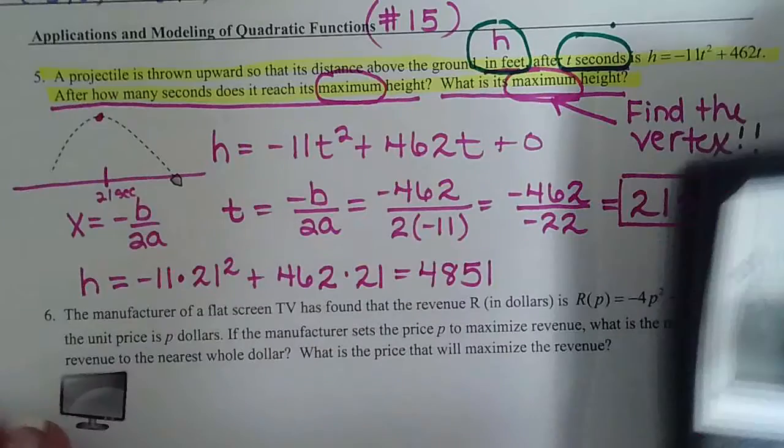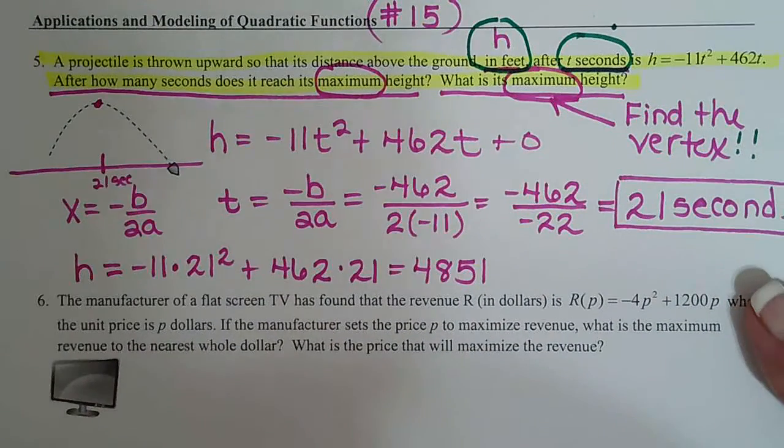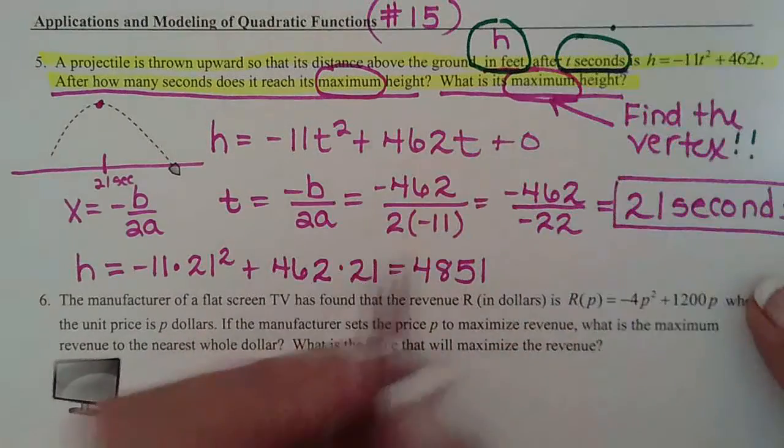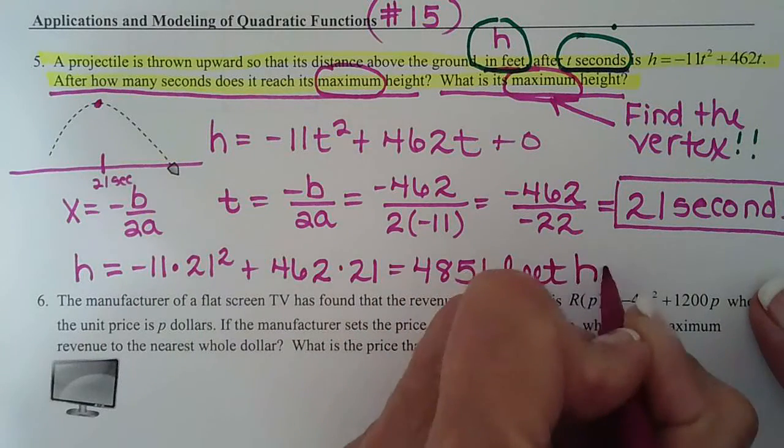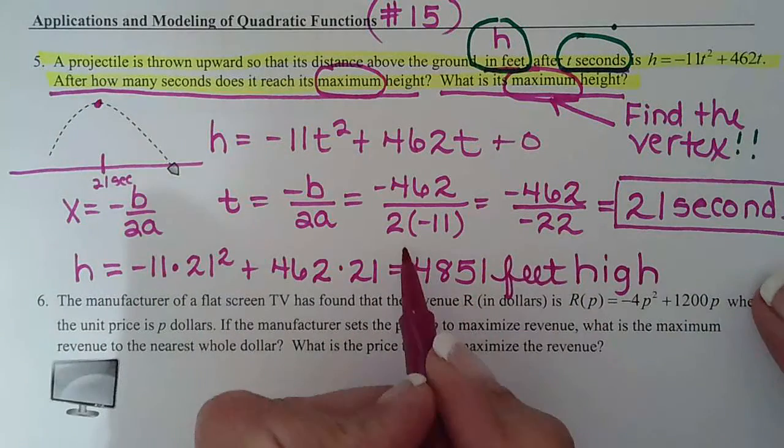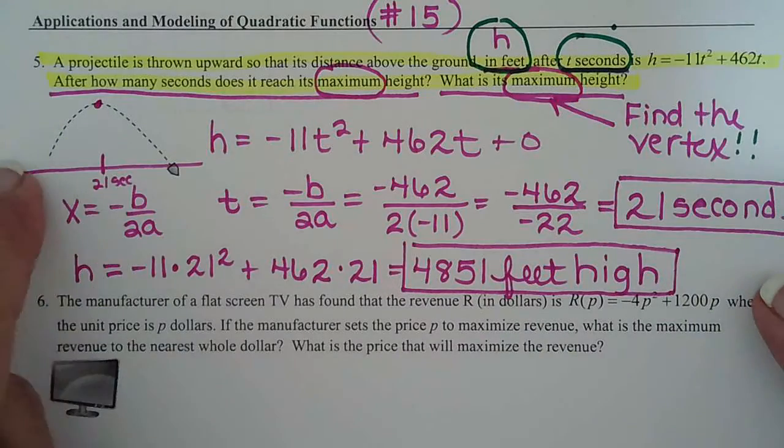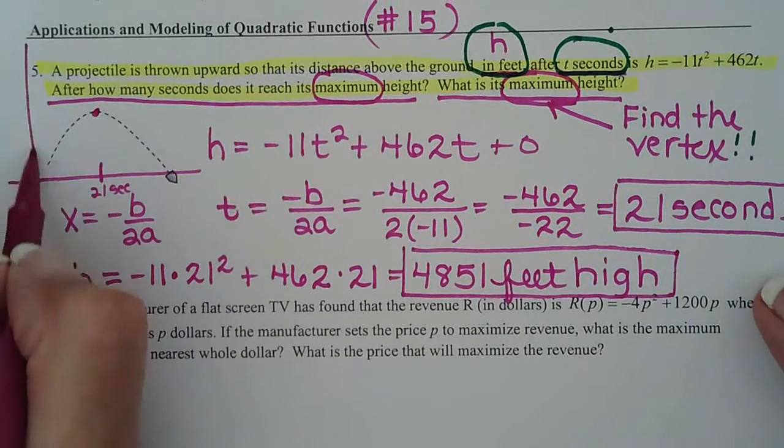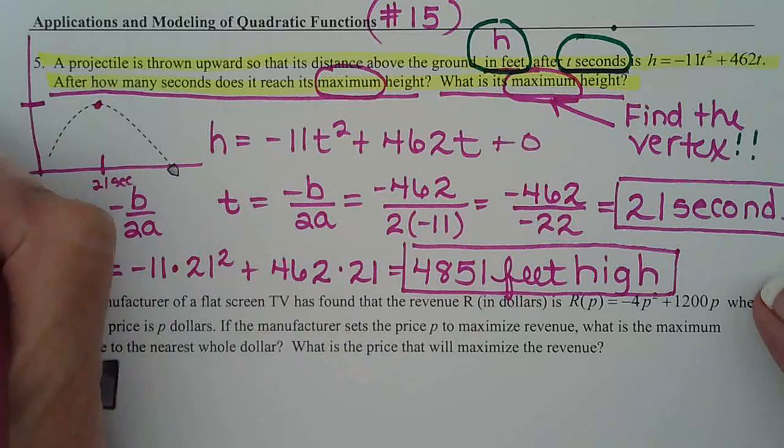And then we look here, and this is why we always use variables so we know what we're labeling. I'm labeling height, and height is in feet, so this is how many feet high the object will be. So after 21 seconds, so seconds is on the x-axis, on the y-axis you're going to be at 4851 feet.